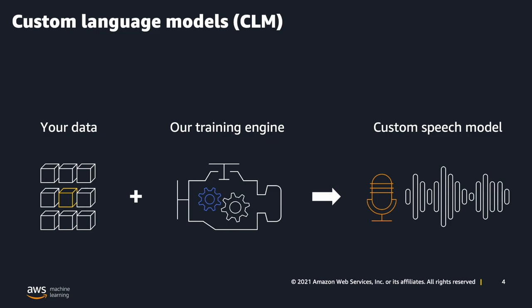Custom language models, or CLM for short, allows you to leverage domain-specific data that you already have to train custom speech models tailored for your specific transcription use case. A CLM is built using text data — there is no requirement for acoustic data to build CLMs. Most businesses actually have existing text data that can be used to train CLMs. Some examples of this training data include instruction manuals, website content, brochures, textbooks, marketing materials, or even existing reference transcripts of audio files. What matters is that the text represents the language and vocabulary that's spoken in your business domain.